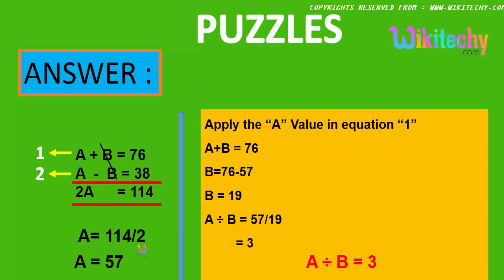A is equal to 114 divided by 2. The value of A is 57. Now, applying the value of A in equation 1, you will be getting B is equal to 76 minus 57, that's B is equal to 19.